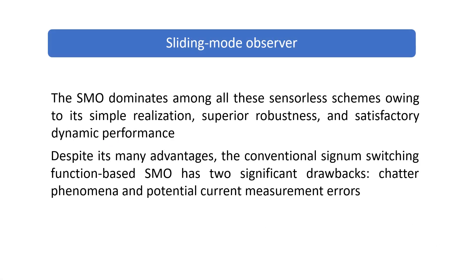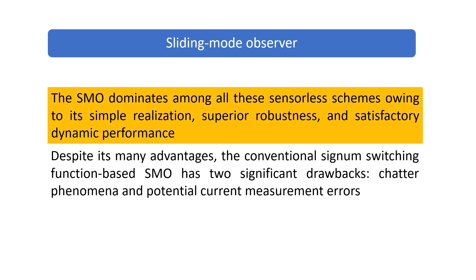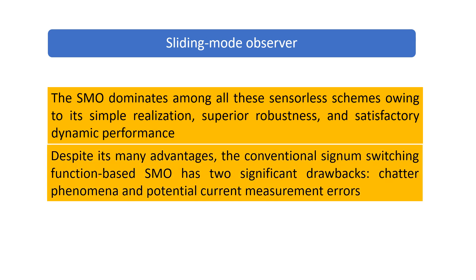The SMO dominates among all these sensorless schemes owing to its simple realization, superior robustness, and satisfactory dynamic performance. Despite its many advantages, the conventional Signum switching function-based SMO has two significant drawbacks: chatter phenomena and potential current measurement errors.